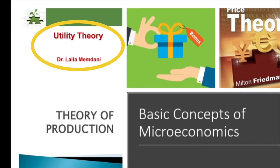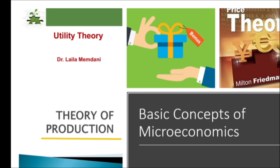Utility Theory: consumers will choose to purchase and consume a combination of goods that will maximize their happiness or utility, subject to the constraint of how much income they have available to spend. Production Theory: this is the study of production or the process of converting inputs into outputs. Producers seek to choose the combination of inputs and methods of combining them that will minimize cost in order to maximize their profits.